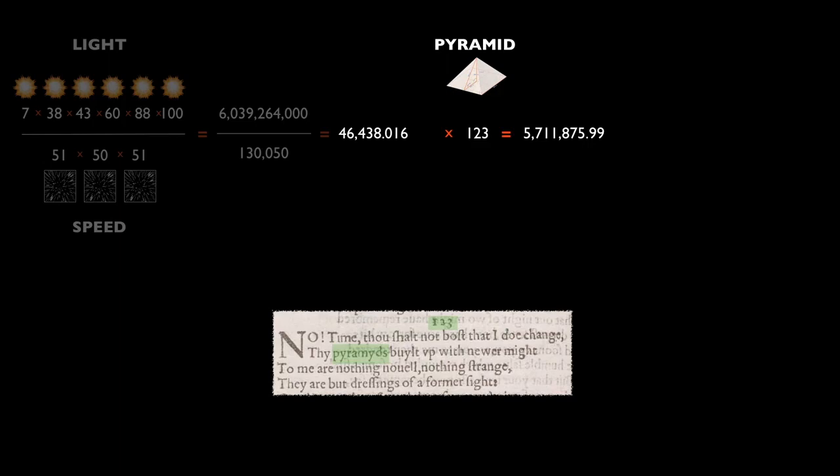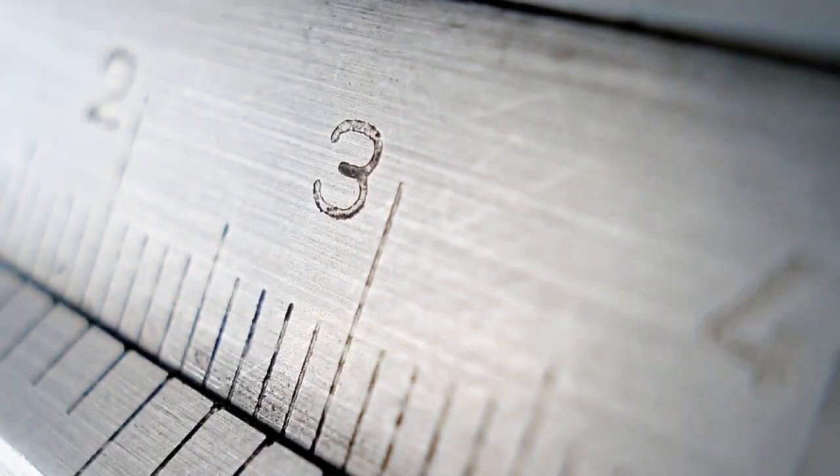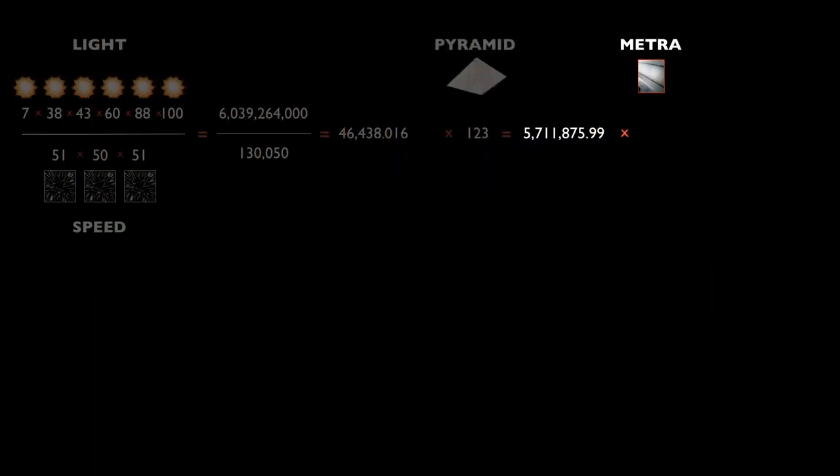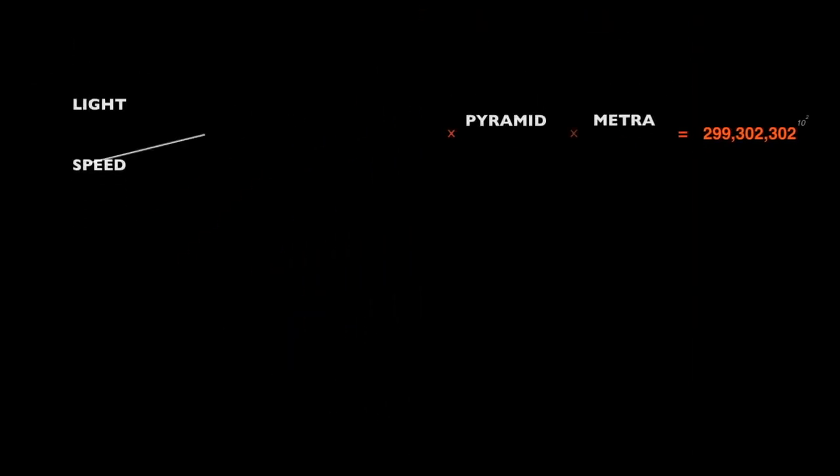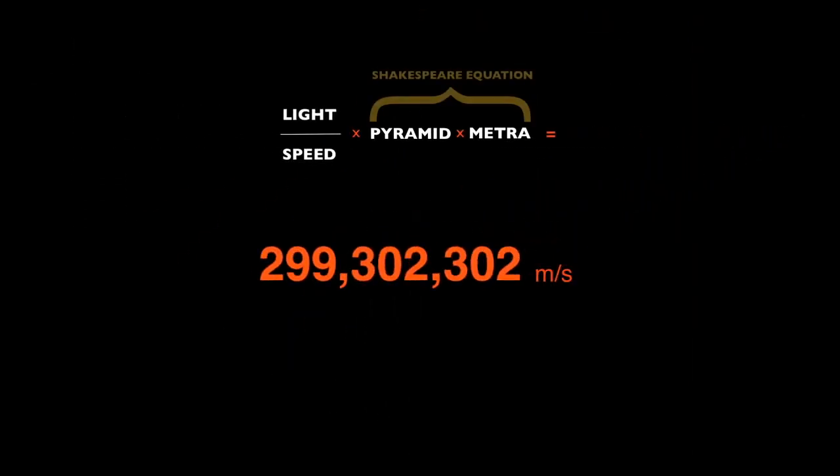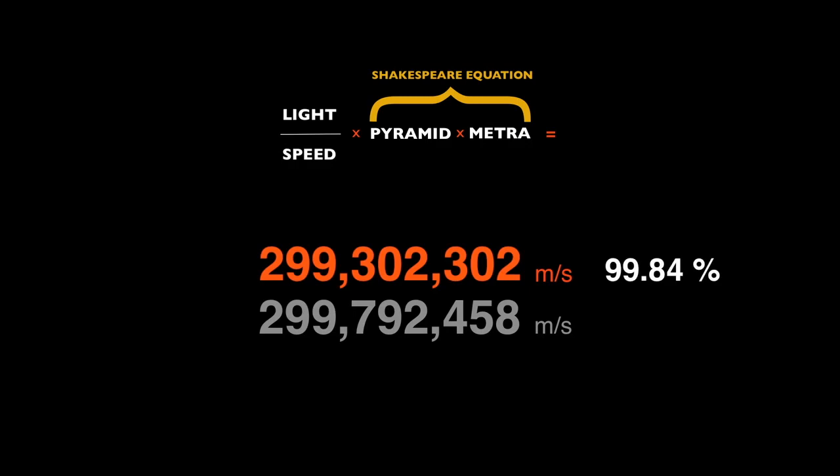But he's working in the royal cubits that were used to build the pyramid. And then when we convert those cubits to meters, which I'm calling metra here, the Greek word for measure, the formula for that is to multiply by pi over 6, precisely, which is 0.524. And then we see the magic. It gives us this result, which is the speed of light to 99.84% accuracy.